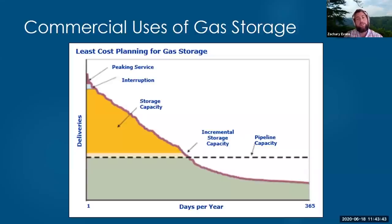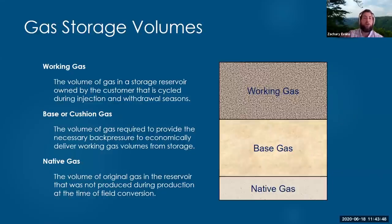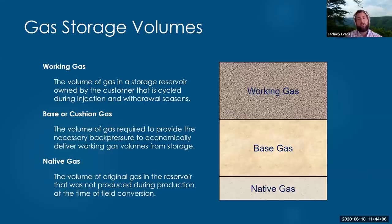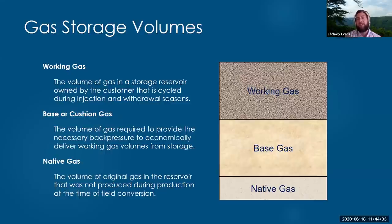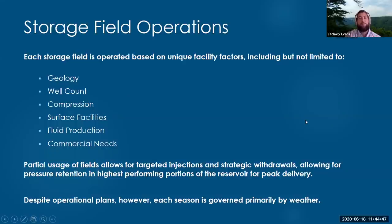Three volumes to understand: native gas is everything in the ground at the time of conversion — a sunk cost that isn't coming out. Base gas is the volume providing pressure support for working gas cycling, owned by the storage operator. Working gas is the customer gas — since a change in law in the 1990s, storage operators don't take ownership, just possession of the customer's gas; customers nominate it on the system, transport it via pipeline, and store it, but retain ownership. The base gas provides back pressure for economically efficient cycling.